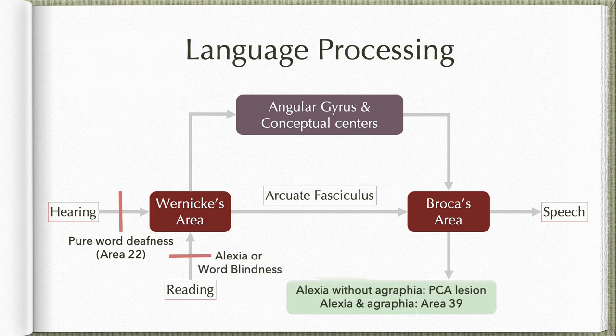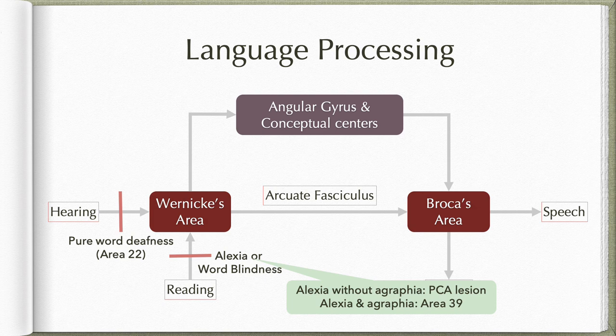Similarly, if there is a connection loss between the visual area and Wernicke's area, that results in alexia or word blindness. Alexia is a broad topic with many causes, but briefly: alexia without agraphia — the patient cannot read but can write — most often results from a lesion to the left posterior cerebral artery, so the left visual cortex is not sending information to the angular gyrus. Alexia with agraphia — patient cannot read and cannot write — is often due to a lesion to the angular gyrus itself.